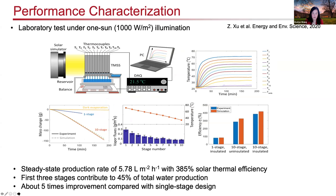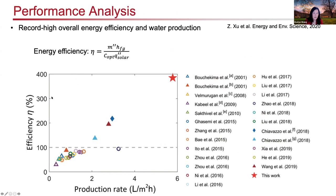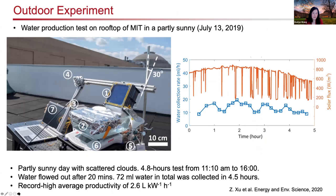Instead of intricate structures, we use a simple paper towel as an evaporator, Teflon-coated aluminum as a condenser, and the front side is coated with a selective solar absorber paint in a nylon frame. This low-cost device achieves a water production rate of about 5.8 liters per meter squared per hour and very high solar thermal efficiency — exceeding about 400% — because of the multi-stage design. We've also demonstrated equally good performance in outdoor rooftop testing.